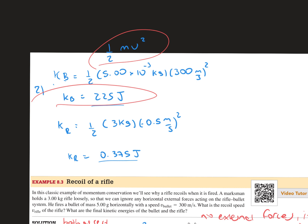In regards to the rifle, we have 1/2 times 3, the mass, times 0.5, the velocity, squared. That should give us a kinetic energy of 0.375 joules.